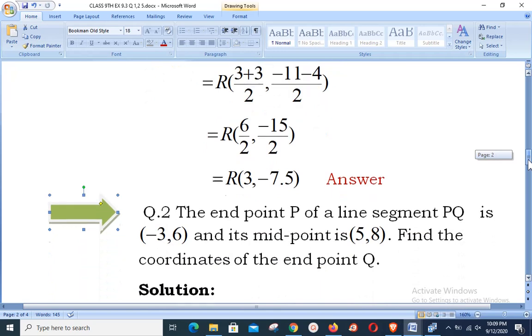Next statement, Question number 2: The endpoint P of a line segment PQ is (-3,6) and its midpoint is (5,8). Find the coordinates of the endpoint Q. Students, you need to understand the wording of the question. Now you are given the midpoint and one endpoint; you have to calculate the other endpoint.